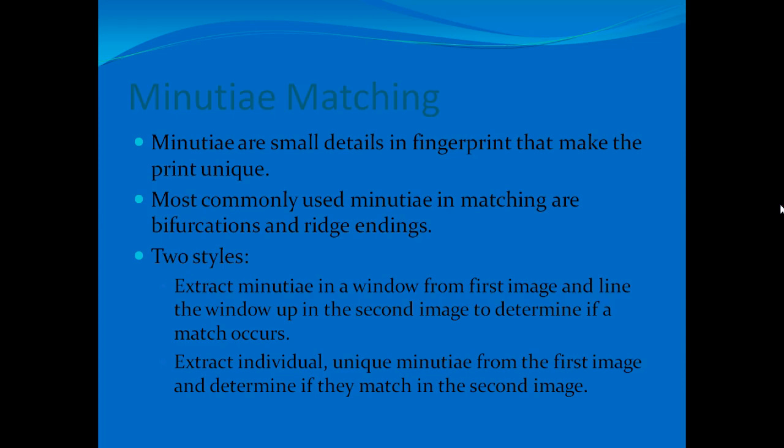The second type of fingerprint recognition implemented was minutiae matching. Minutiae are the small details in a fingerprint that make it unique. The most commonly used minutiae are bifurcations and ridge endings. Bifurcations are points where one ridge splits into two; ridge endings are where a ridge ends. There are two styles of minutiae matching: the first extracts a window of minutiae from the first image and slides it through the second image to find a match; the other extracts individual unique minutiae from the first image and checks if they match in the second image.